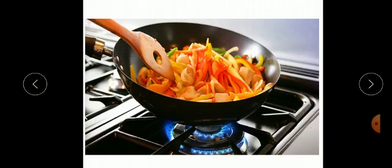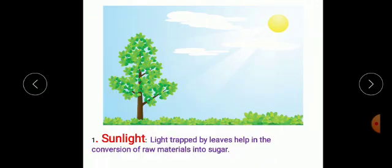So to cook food the primary necessity is energy. It can be in the form of heat or electricity. Similarly, plants require light energy for the manufacture of their food. So the first condition necessary for photosynthesis is sunlight. Light trapped by leaves helps in the conversion of raw material into sugar.